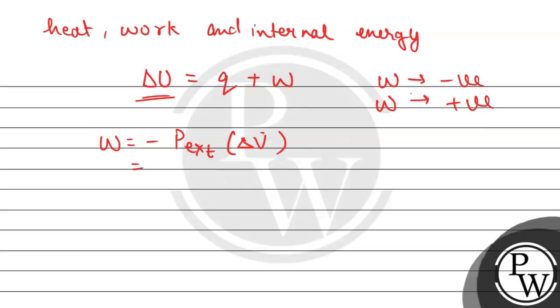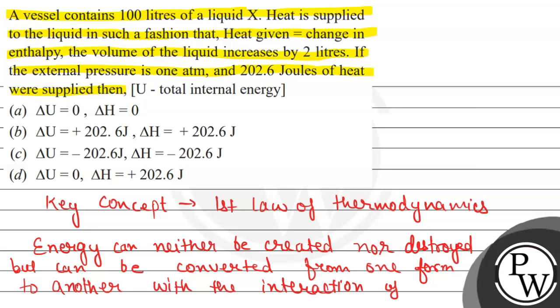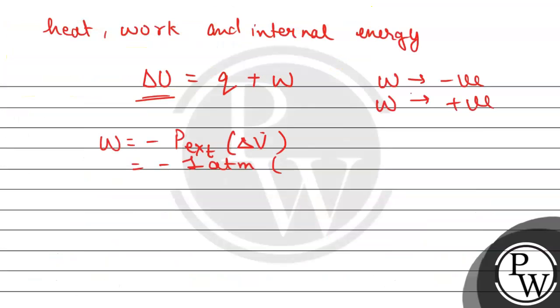And P external value is given to us, that is 1 atmosphere. So minus 1 atmosphere. And the volume change that is given is 2 L. So it will be minus 2 L atmosphere. We will change it into joules. It will be multiplied by 101.3, so this will be minus 202.6 joules.